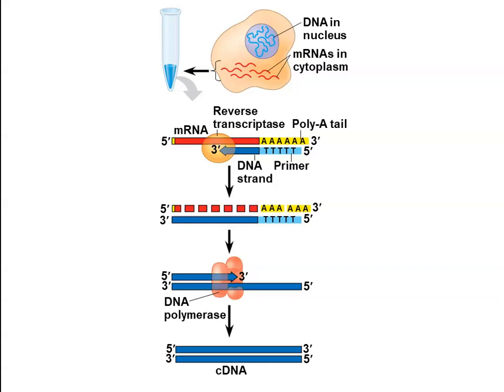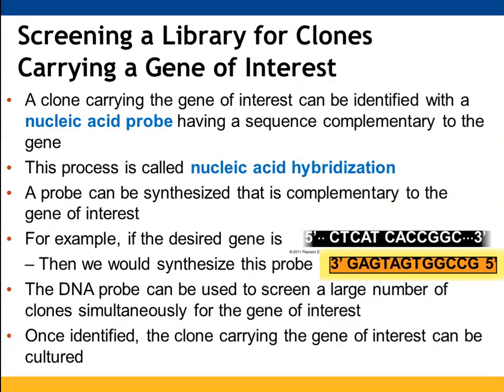Once you have all of these clones containing different segments of DNA, you can use a probe to determine which clone contains the gene of interest. You use a nucleic acid that contains a known sequence for that gene, and you want it to hybridize — to bind to the DNA in one of those clones that contains a complementary sequence. This allows you to screen many different clones containing all sorts of genes quite quickly.